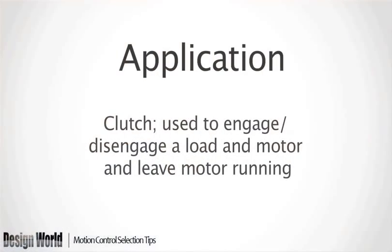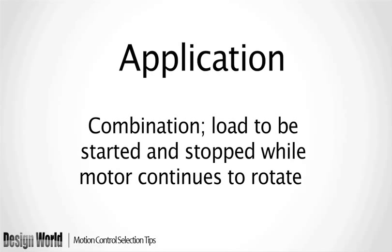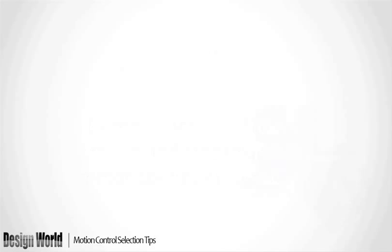A clutch would be used in applications where it's desirable to engage or disengage a load and motor while leaving the motor running. When a clutch is used, the load is allowed to coast to a stop. A brake would be used in applications where accurate stopping of the load is needed and the motor will stop as well. A clutch and brake combination would be used where the load will be started and stopped while the motor continues to rotate.